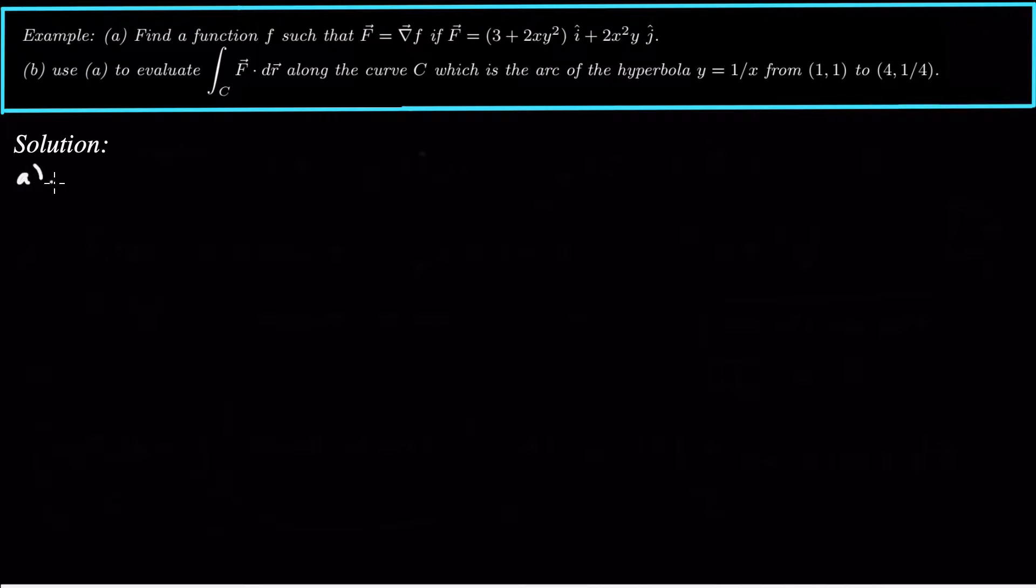We have to recall what is the gradient. So it says the gradient of f should be equal to this field. What is the gradient? First of all, the gradient is the vector field fx, fy. So that's the gradient. And then that's supposed to be equal to this component 3 plus 2xy squared, and that is our field. So the gradient is supposed to be equal to the field.